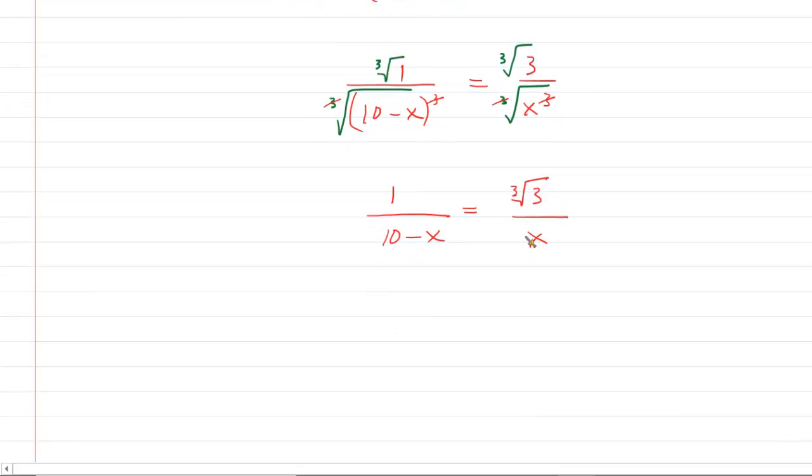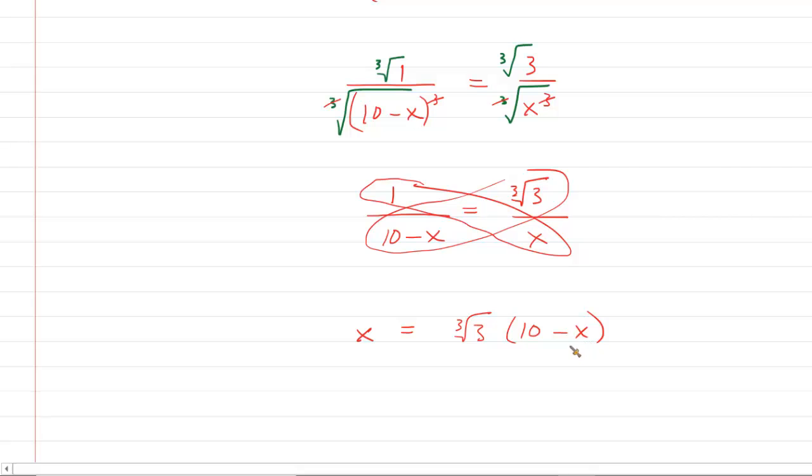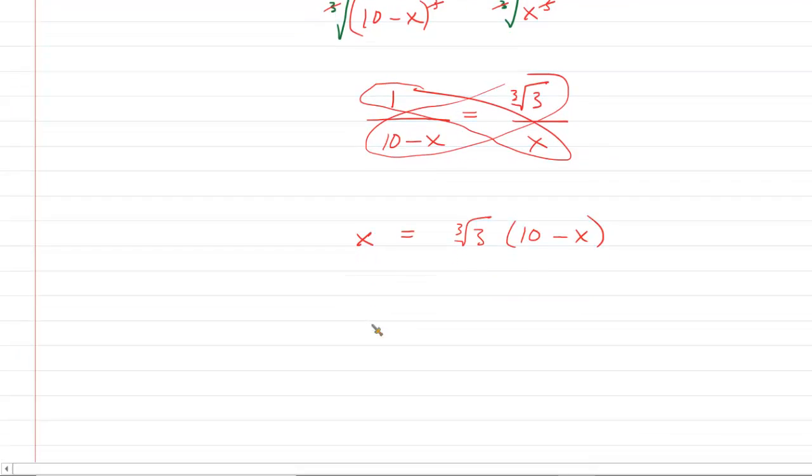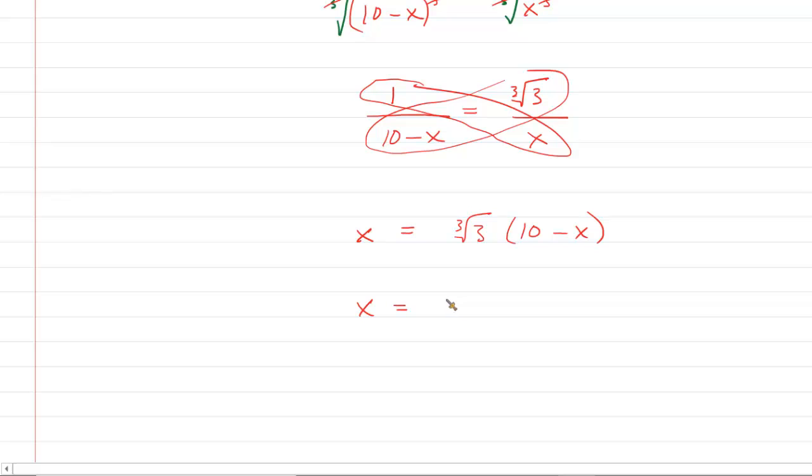Next I would prefer to cross multiply. So you go X times 1, which is just X, and set that equal to whatever we get by multiplying that nastiness. So you're going to have cube root of 3 multiplied by 10 minus X. Let's go ahead and distribute the cube root of 3. So you'll have X equals, you're going to have 10 cube root of 3 minus X cube root of 3. You could also say cube root of 3X.